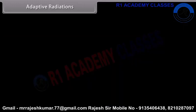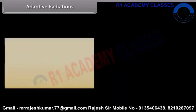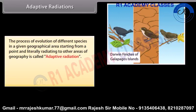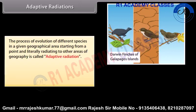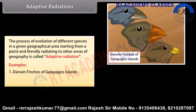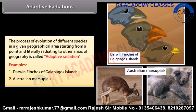Example of analogous structures: wings of a butterfly, bird and bat. Adaptive Radiation is the process of evolution of different species in a given geographical area, starting from a point and literally radiating to other areas of geography. Examples include Darwin's finches of the Galapagos Islands and Australian marsupials.